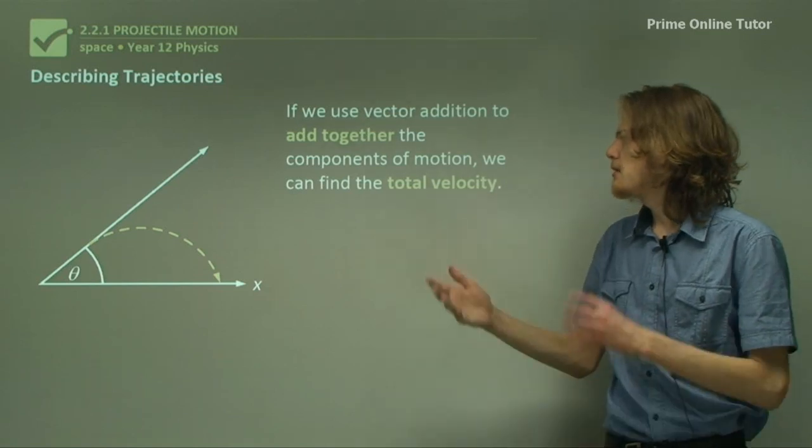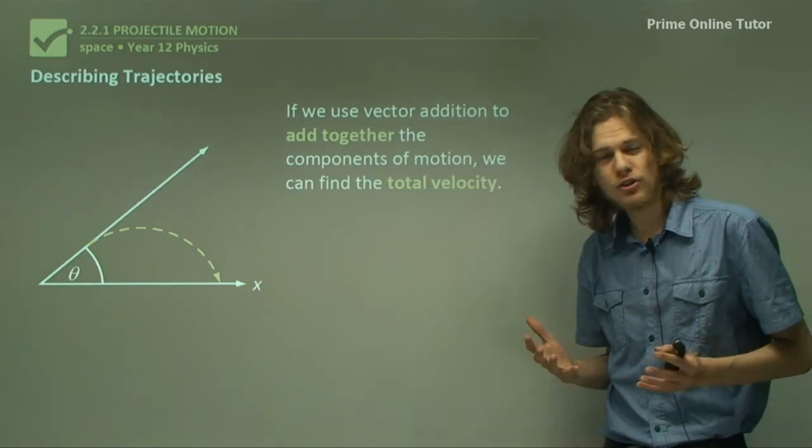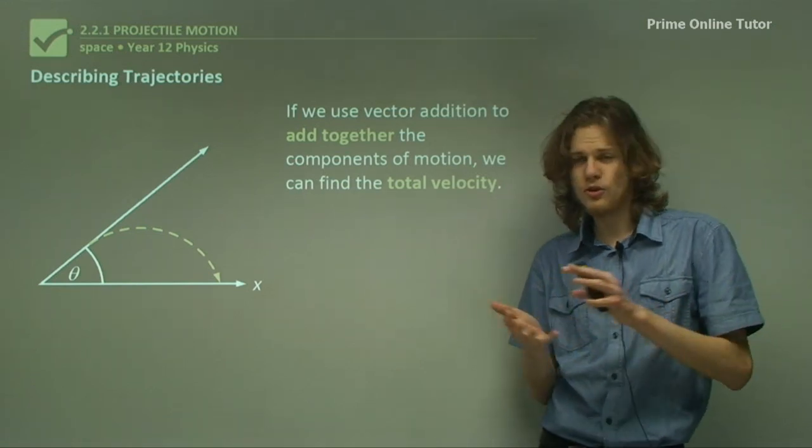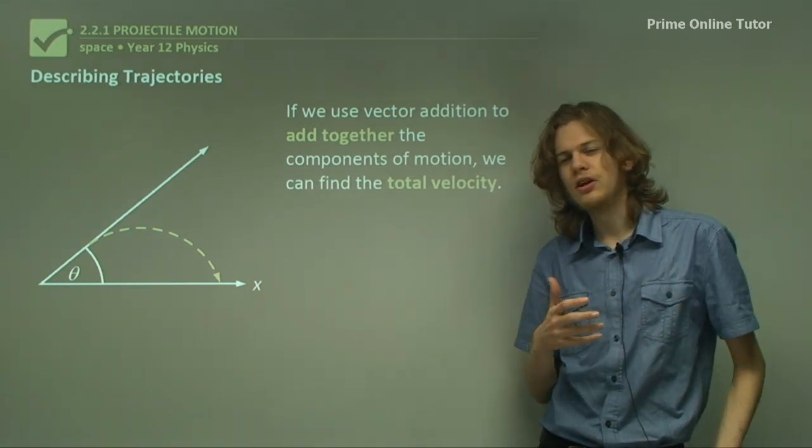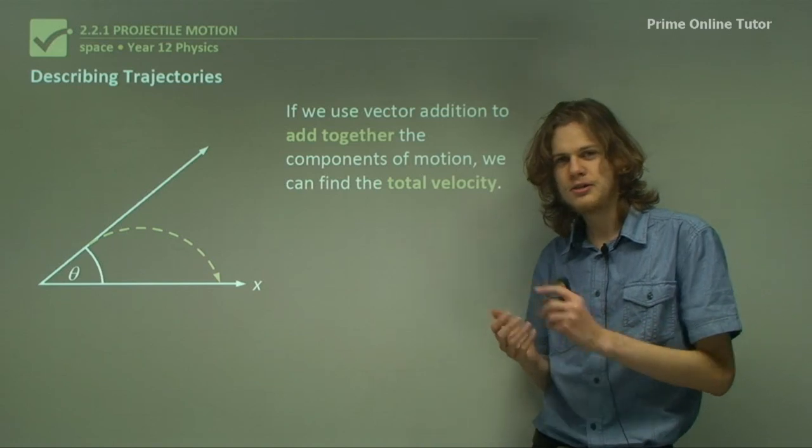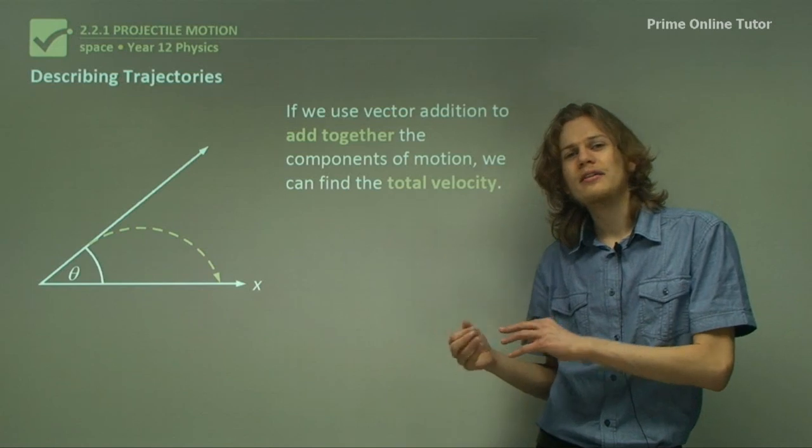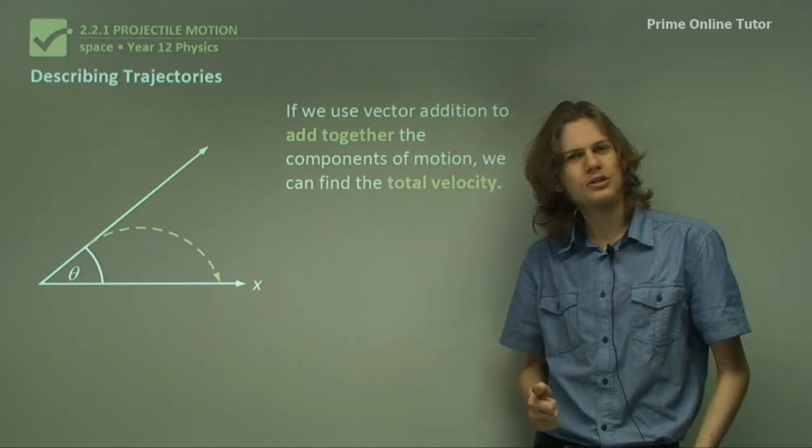If we use vector addition to add together the components, we can find the total velocity. This is good if we know how the components are going to change, but not necessarily how the total vector is going to change. By modeling the changes to the components of motion, we can figure out how the total motion will change.